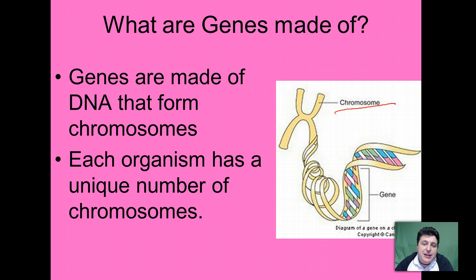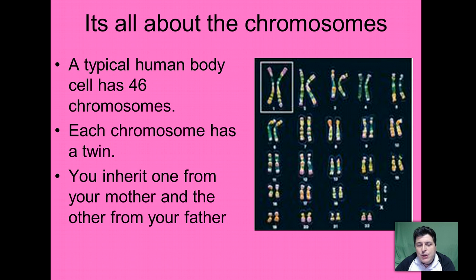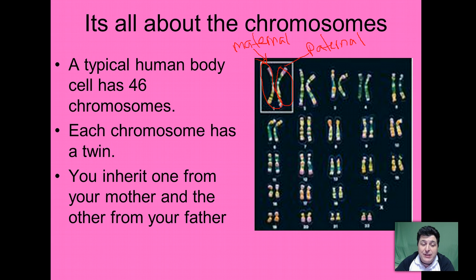Each organism is going to have a unique number of chromosomes. In humans, we have 46 chromosomes. Each chromosome is going to have a twin — you inherited one chromosome from your mom and the other from your dad. The one you get from your mom is called the maternal chromosome, and the one from your dad is called paternal. Since each human body has 46 chromosomes, that means we get 23 from our mom and 23 from our dad.